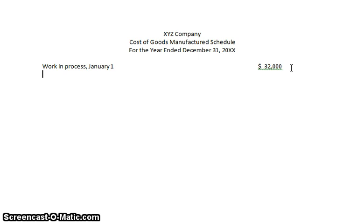$32,000 tells me we were working on $32,000 worth of product when we began January 1 — it wasn't finished, it was still in process. If I want to figure out the cost of goods actually manufactured in a period, I need to consider those costs already associated with what was partially finished, plus costs added to it: additional materials, labor to convert those materials into finished goods, and manufacturing overhead applied.